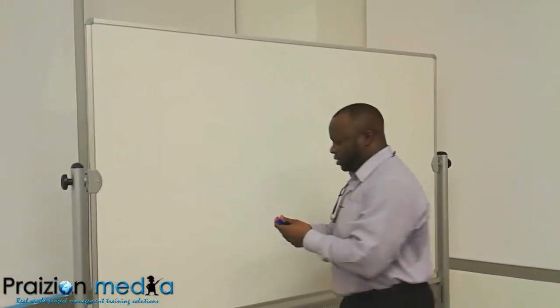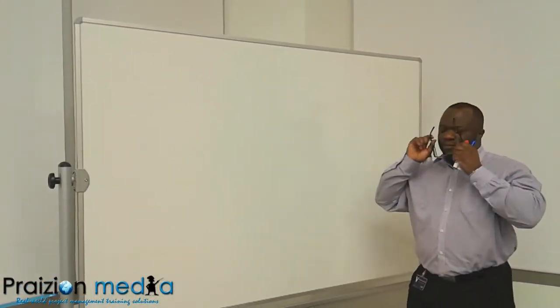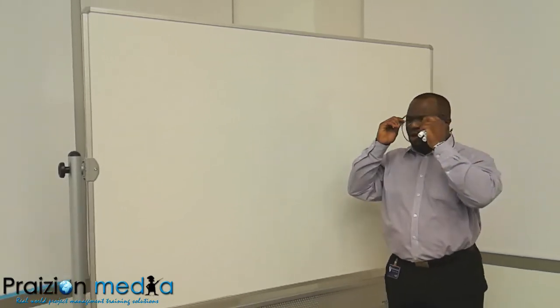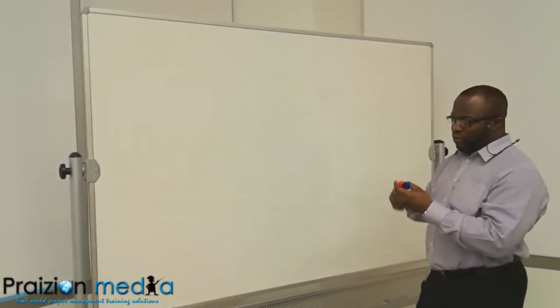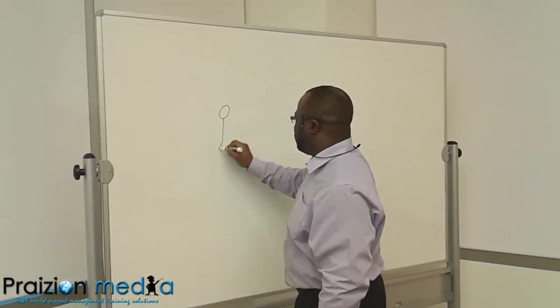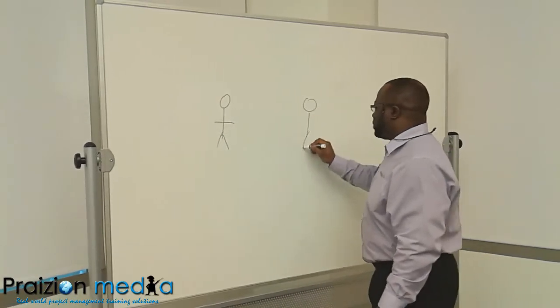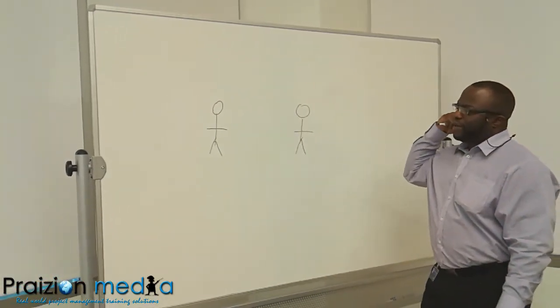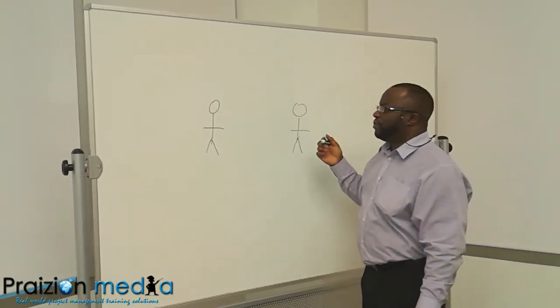All right, so we're going to talk about the N times N minus 1 divided by 2 formula. The whole concept of N times N minus 1 divided by 2 could stem from the communication model where you have a sender and a receiver.